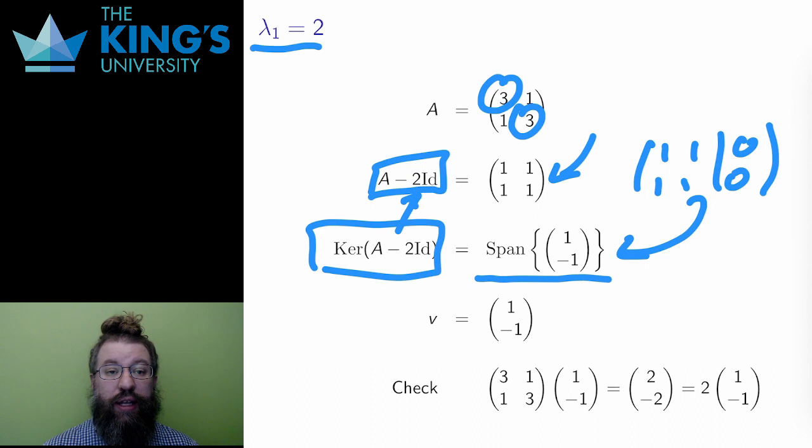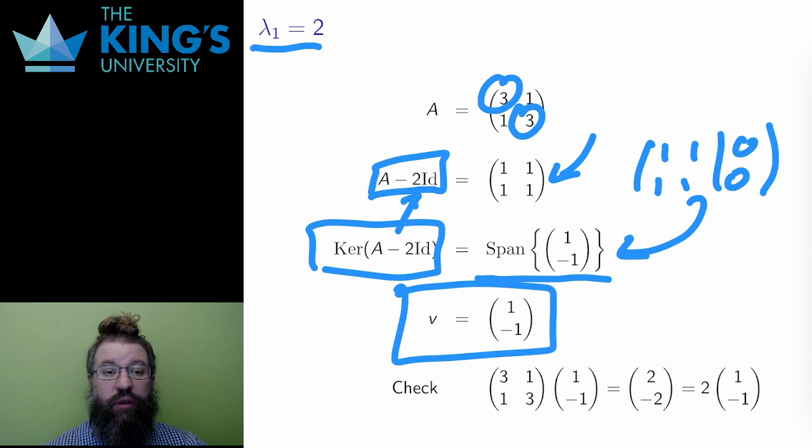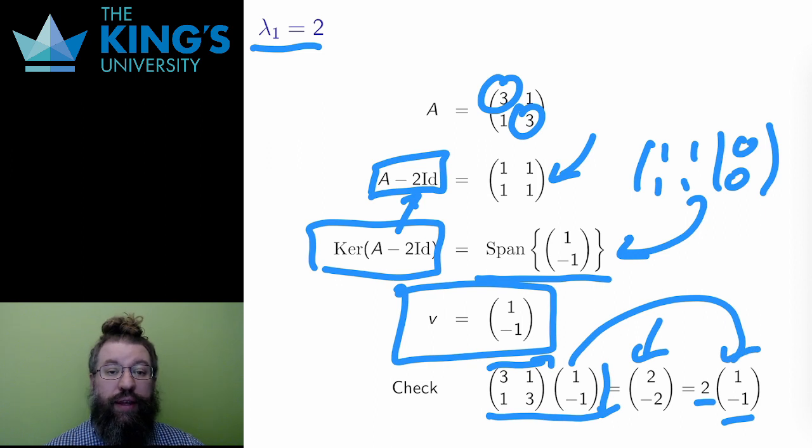In this case, the kernel is a line, the span of 1, negative 1. I can take any multiple of 1, negative 1 as the eigenvector for this eigenvalue, so I'll just choose 1, negative 1 for now. I can check to make sure the definition is satisfied, so I let the matrix act on the eigenvector. Calculating the matrix action, across and down, across and down, gives the output 2, negative 2, which is 2 times the original vector. Therefore, this is an eigenvector, and the eigenvalue is 2.